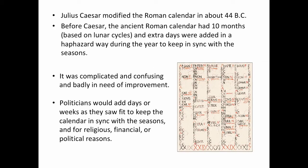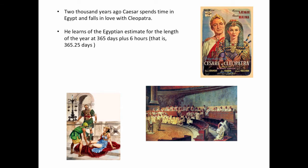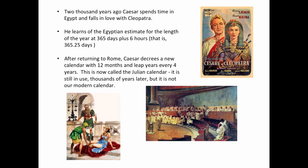Both influences were combined into the ancient Roman calendar, which became the early Christian calendar, then the Catholic calendar, and then the modern calendar used by everyone in the world. Julius Caesar modified that Roman calendar in about 44 BC. Before Caesar, the ancient Roman calendar had ten months based on lunar cycles, and extra days were added in a haphazard way during the year to keep in sync with the seasons. It was complicated and confusing. Politicians would add days or weeks as they saw fit for religious, financial, and political reasons. 2,000 years ago, Caesar spent time in Egypt and fell in love with Cleopatra. He learned of the Egyptian estimate for the length of the year at 365 days plus 6 hours — that would be 365.25 days.